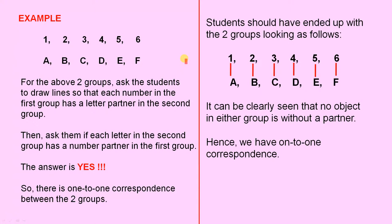Then ask them if each letter in the second group has a number partner in the first group. The answer is yes. So there is one-to-one correspondence between the two groups.